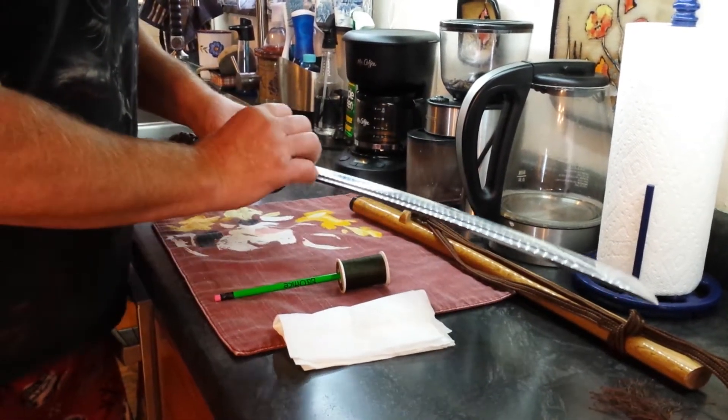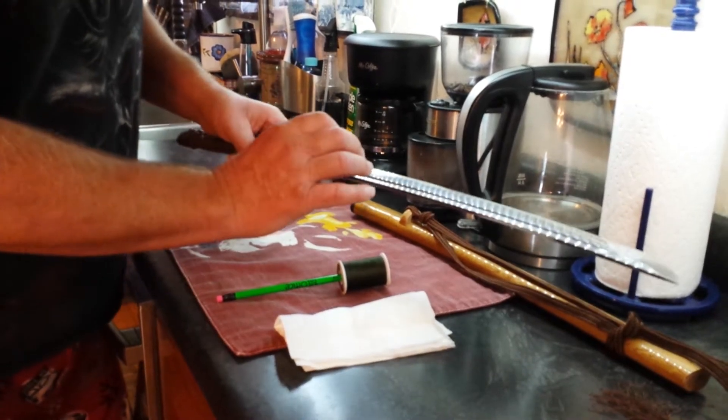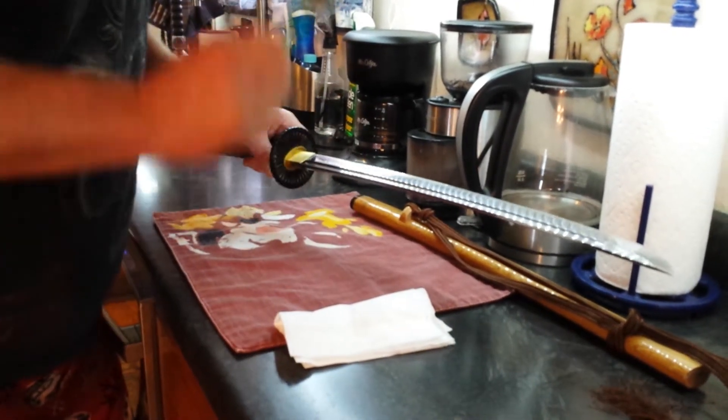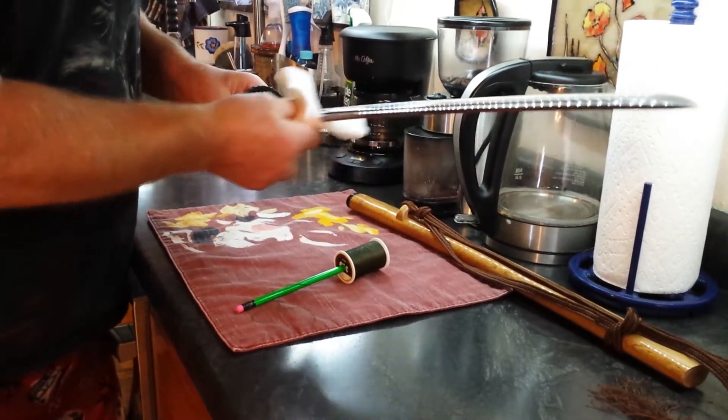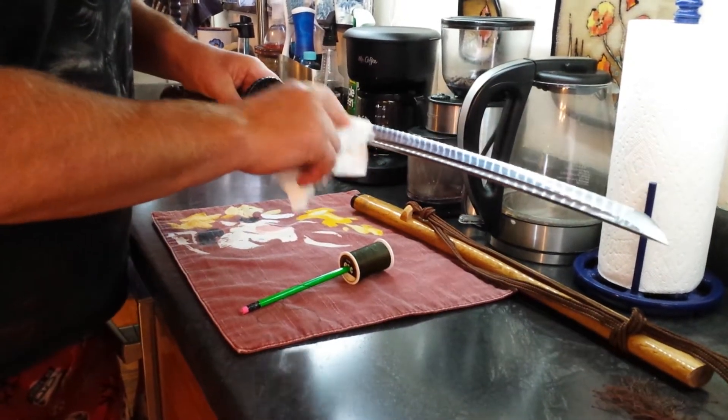And so you get these clumps, and these clumps are a mixture of light particles, but also the very heavy ones that got driven out. And that's the problem, because when you scratch the sword like this, it leaves the finish marred.